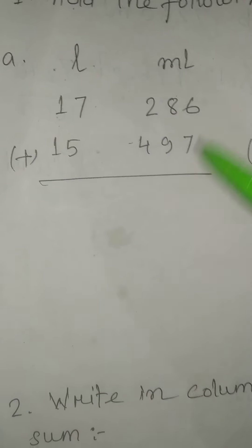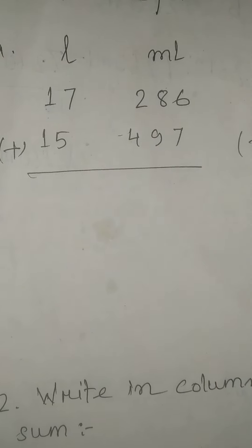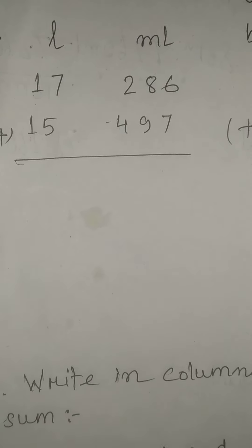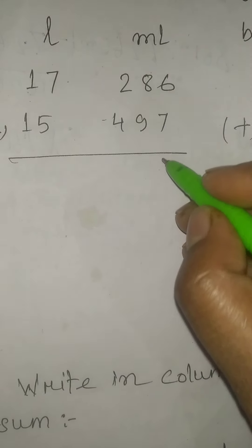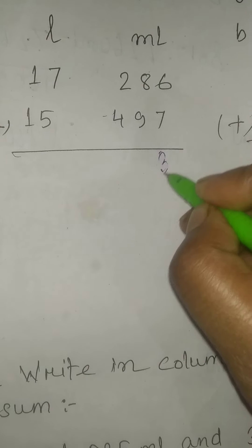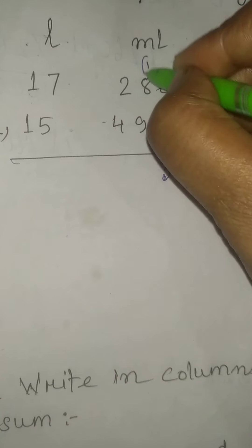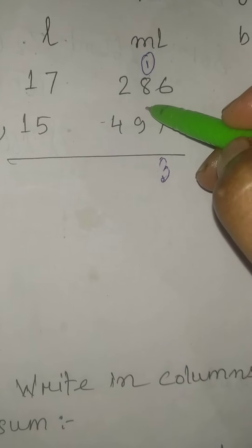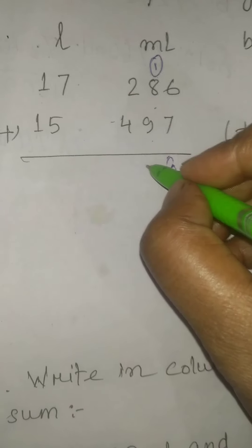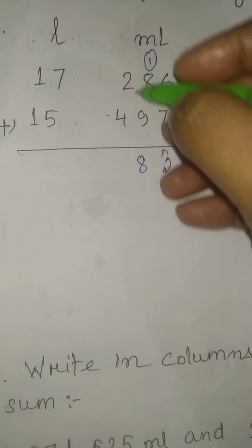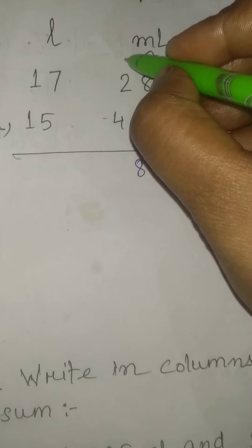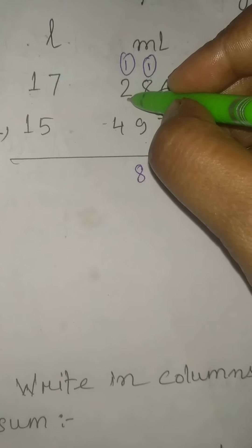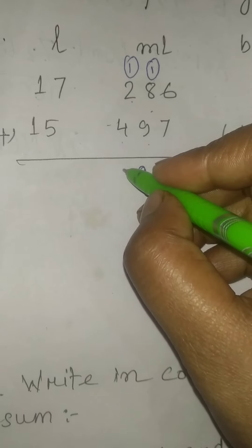Since this question is given as addition, we are going to do the addition. So what is 6 plus 7? 6 plus 7 is 13. So here we will write 3 and carry forward 1. So 1 plus 8 is 9, and 9 plus 9 is 18. We will write 8 here and carry forward 1. So 1 plus 2 will be 3, and 3 plus 4 will be 7.